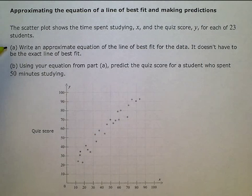Write an approximate equation of the line of best fit for the data. It doesn't have to be the exact line of best fit. Using your equation from part a, predict the quiz score for a student who spent 50 minutes studying.